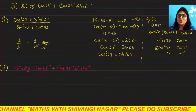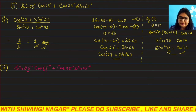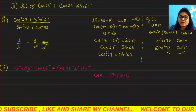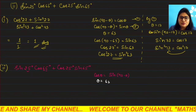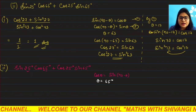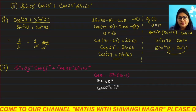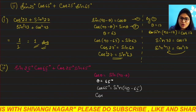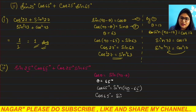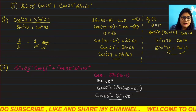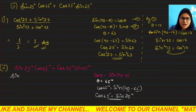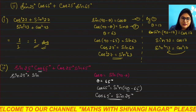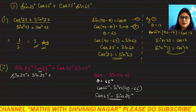I am converting cos65° into sine form. We know cosθ = sin(90 - θ). Putting θ = 65°: cos65° = sin(90 - 65°) = sin25°. So in place of cos65°, we can put sin25°. The first term becomes sin25° × sin25°.